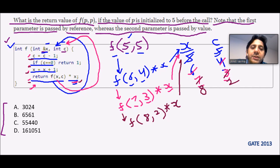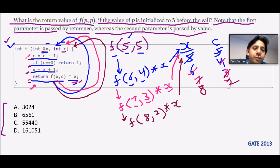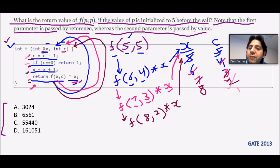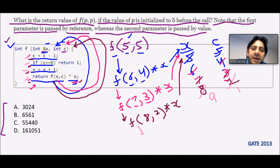When it recursively calls again, c = c - 1, so the new value of c is 1. If c == 0? No, 1 is not equal to 0, so it moves further. x = x + 1, so the new value of x is 9. Then return f(x, c) — it calls f(9, 1) recursively with current values 9 and 1, and then it will multiply with x — the future value of x will be taken.